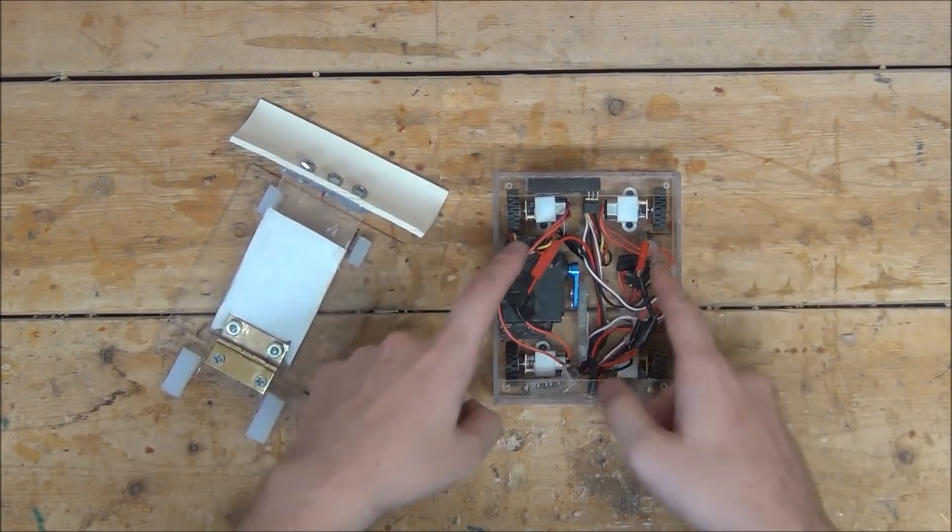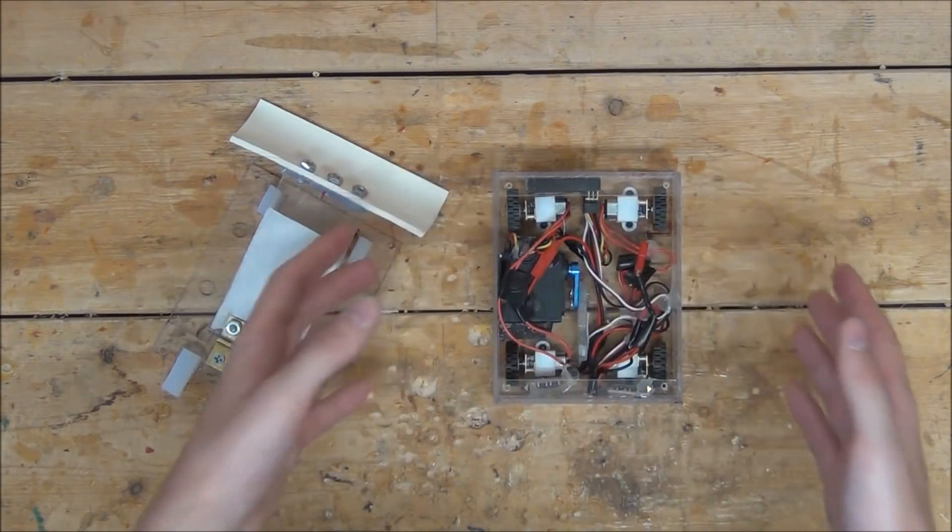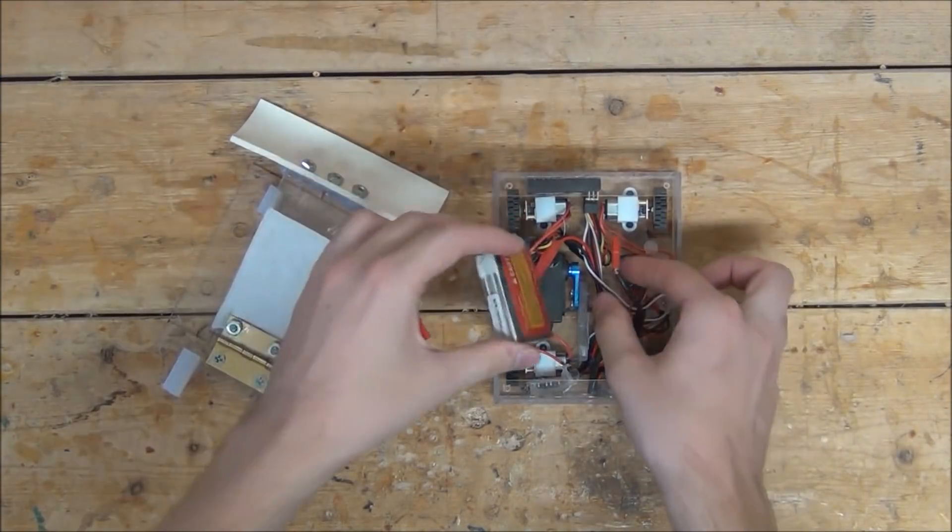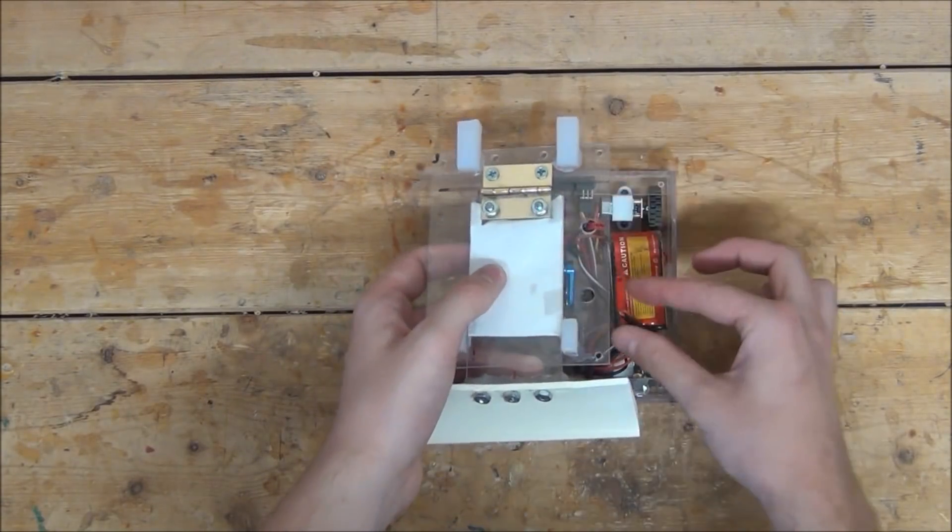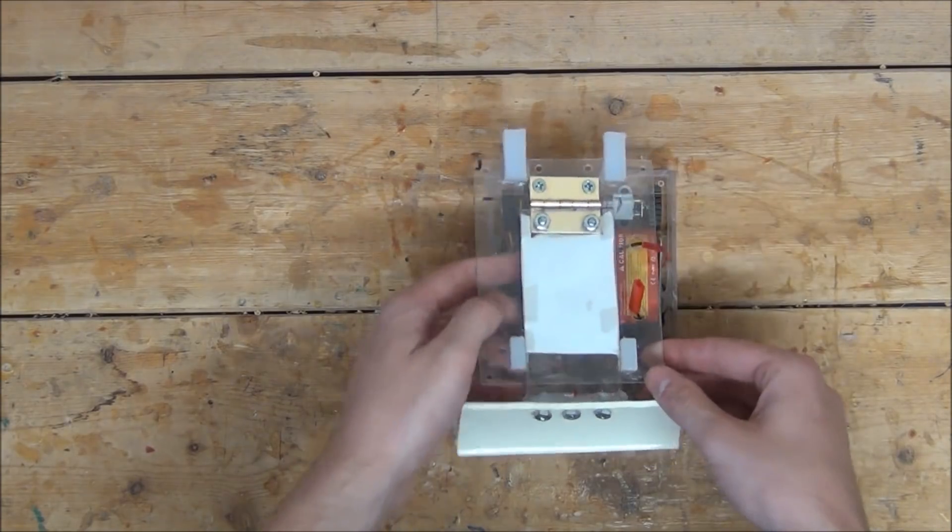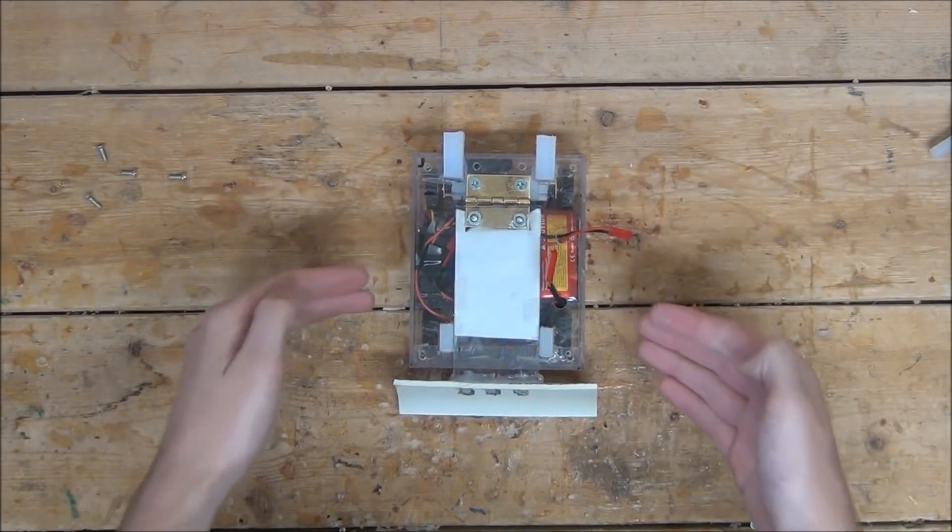There we go, and I dropped in a little bit of hot glue to help keep the wires out of the way. Now I'm going to put in our battery, slip the battery cable and the battery receiver cable through these two small holes I have in the roof, then bolt it down.